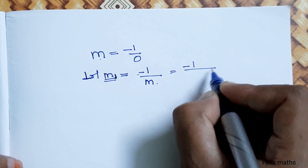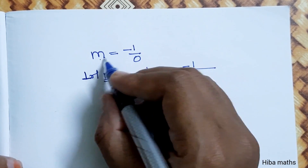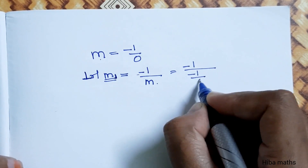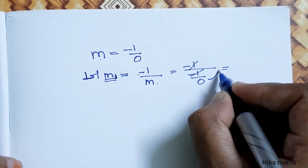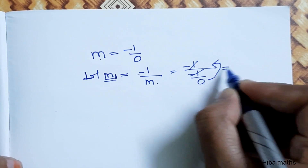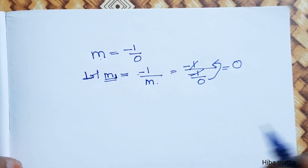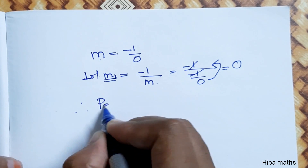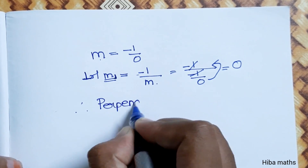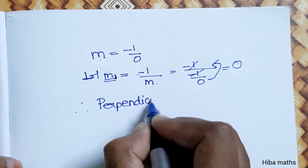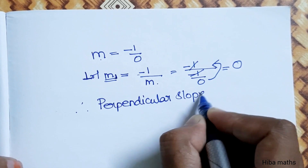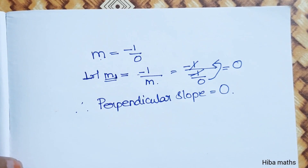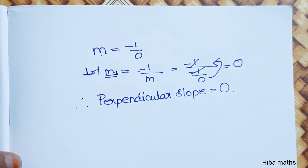Minus 1 by 0 — the minus 1 terms cancel, and it is equal to 0. So the answer is 0. Therefore the perpendicular slope is equal to 0. Thank you so much for watching.